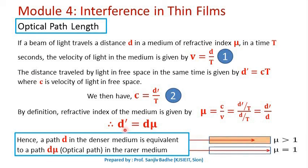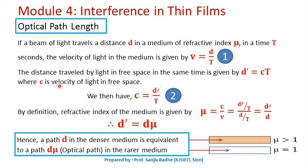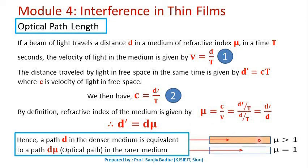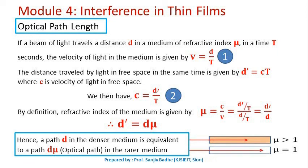In order to calculate the optical path difference, we consider this equivalent path and then calculate the path difference — that path difference is called the optical path difference. Here in this animation, you can clearly see that in the denser medium, the path traveled by the light ray is smaller than the path traveled by the light ray in free space. So this is the optical path and this is the path.